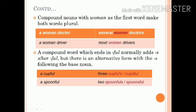Compound nouns with 'woman' as the first word make both words plural. So we say 'a woman doctor' and 'several women doctors', and for 'a woman driver' the plural will be 'women drivers'. A compound word which ends in 'full' normally adds S after 'full', but there is an alternative form with the S following the base noun. So we can say 'three cupfuls' or 'three cups full'.